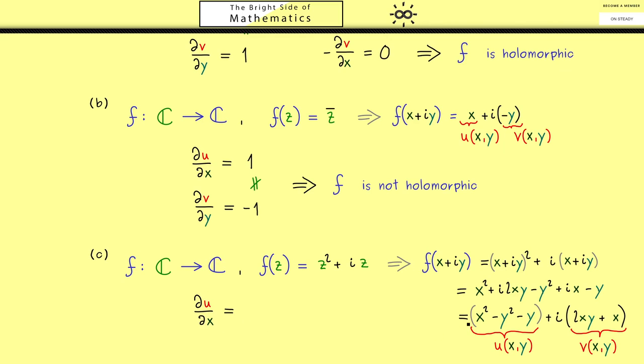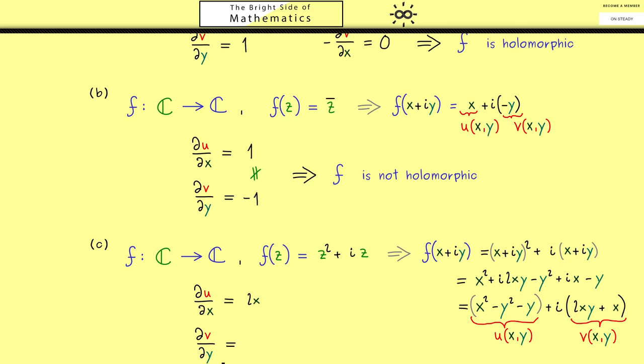First ∂u/∂x, not hard to see, it's simply 2x. Then the second partial derivative we want to calculate is ∂v/∂y, which is also 2x. Hence our first equation is actually fulfilled.